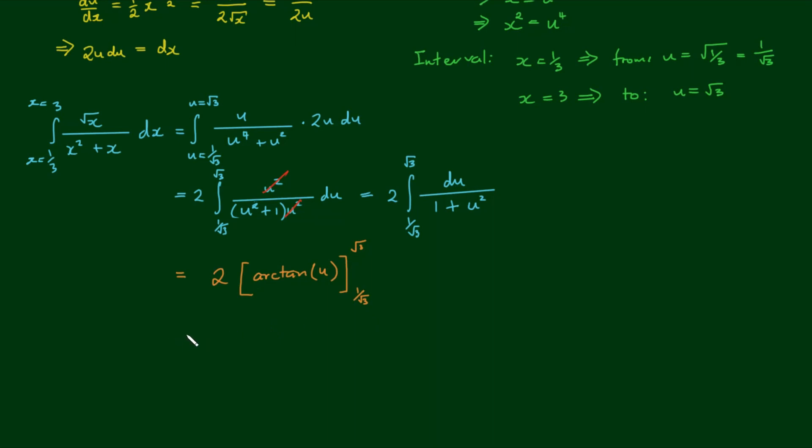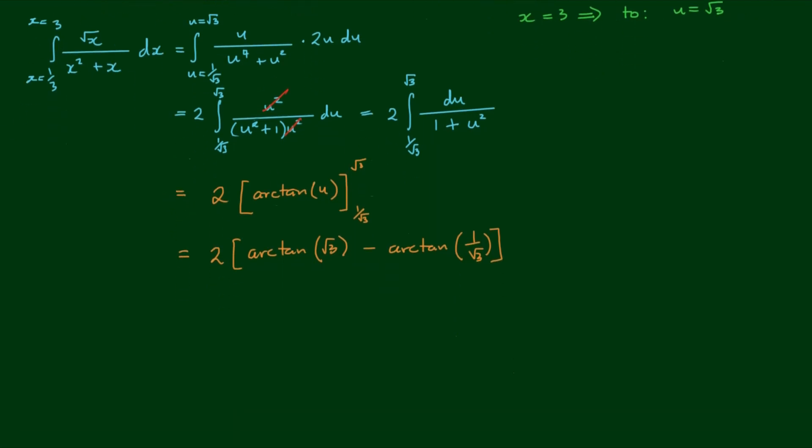So by the fundamental theorem of calculus, we have two by the arc tan of the root of three minus the arc tan of one on root three. Now before you whip out your calculator and find what arc tan of root three is equal to and arc tan of one on root three is equal to, let's workshop this because we want to make mathematics a less mechanical process and more of a reasoning and problem solving process.